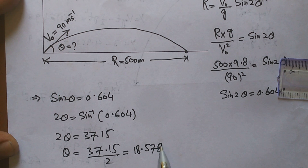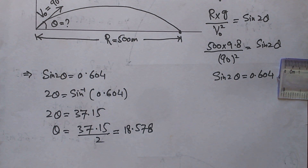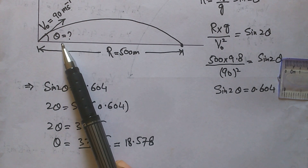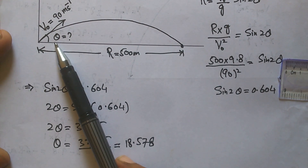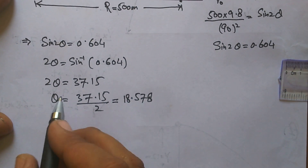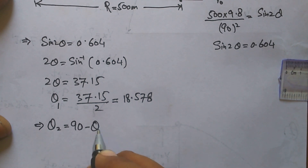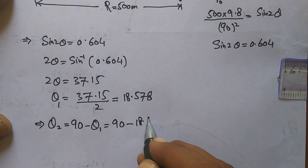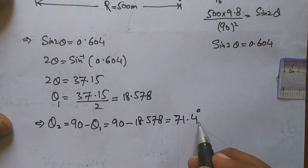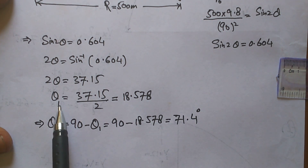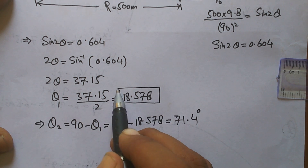As discussed in the numerical theory review I uploaded, remember that when a range is given, there are two different angles that give the same range. These two angles sum to 90 degrees. So θ₂ equals 90 minus θ₁, which is 90 minus 18.578, giving θ₂ equals 71.4 degrees. In exams, remember to give both angle values as your answer.